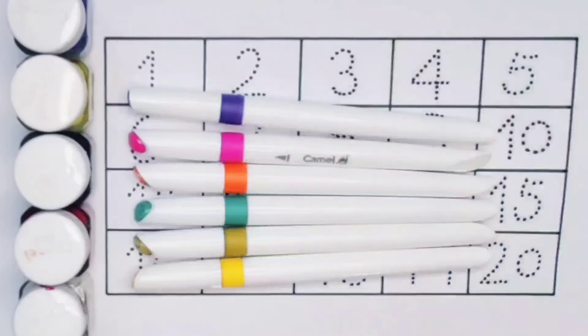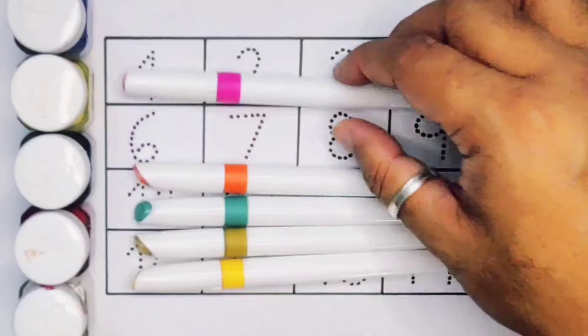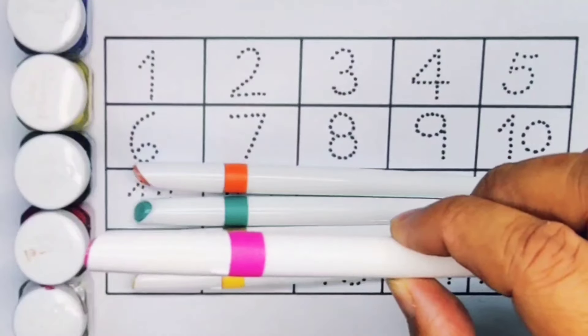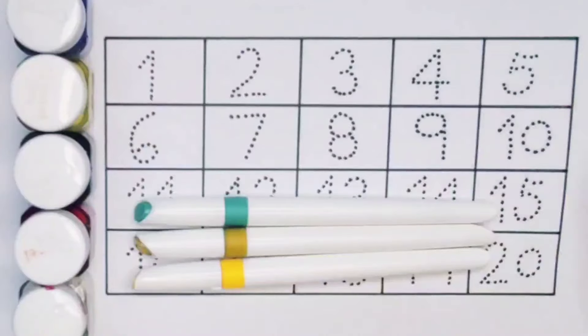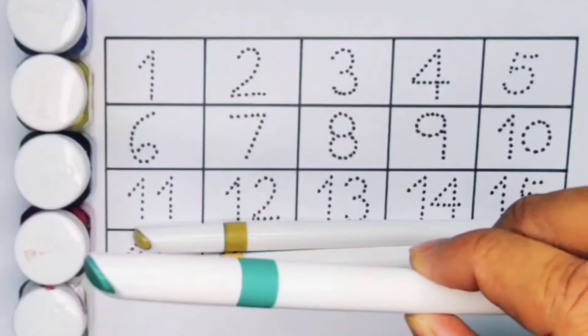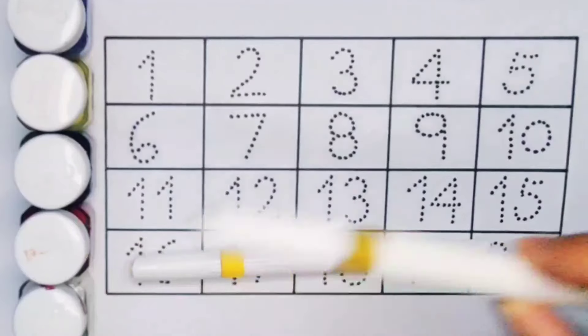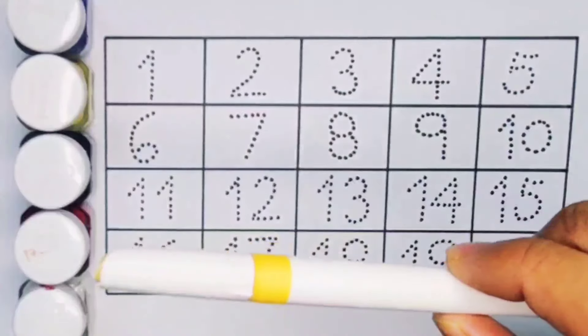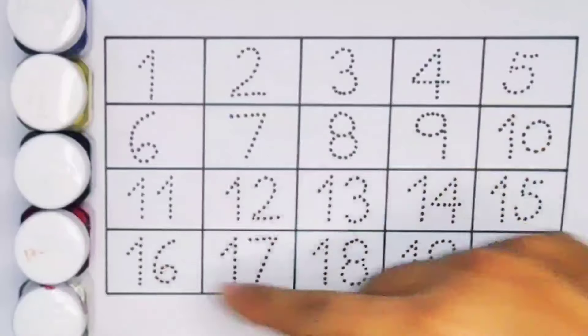First we're going to know the colors name. Light green color, purple color, pink color, orange color, green color, olive color, and yellow color. Now let's learn the numbers counting 1 to 20.